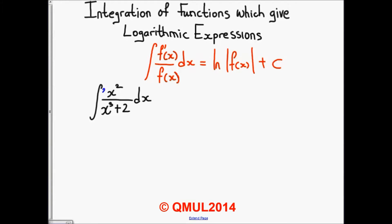we multiply the numerator by 3 to make it the differential of the denominator, then multiply the whole expression by 1 over 3 to cancel out our 3.